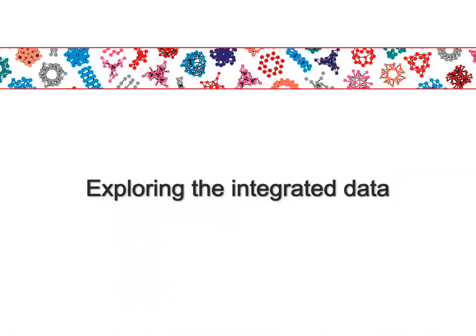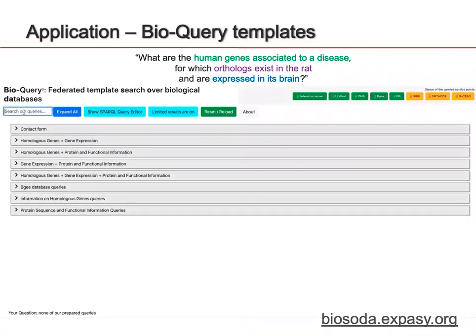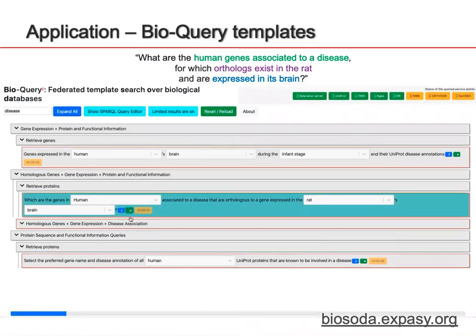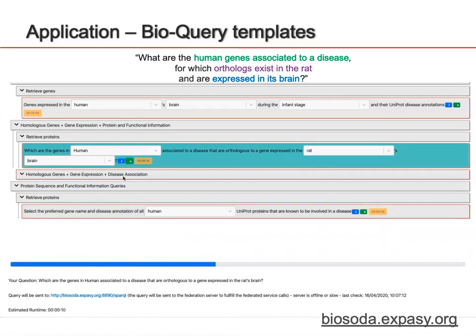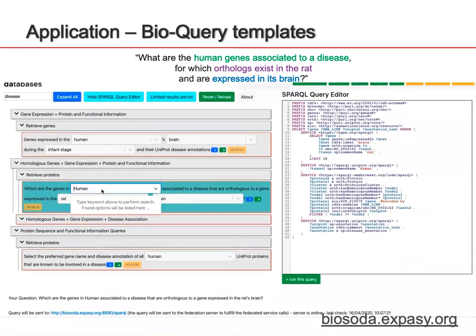Now I want to present some applications we developed over this integrated data. For the question from the introduction — about human genes related to a disease with a corresponding gene expressed in the rat's brain — you can go to browser.expasy.org and search for the disease keyword, look at the templates with the disease keyword, and run it by clicking the green button. You'll get some results. You can also view the equivalent SPARQL query by clicking the blue button, and edit the template — for example, changing from human to mouse — then run the query.